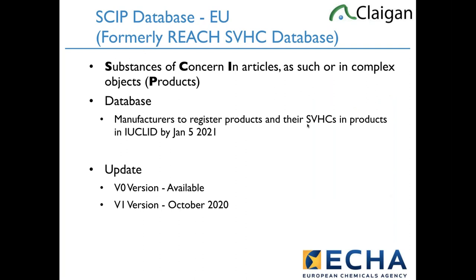We're talking about Substances of Concern in Articles as Such and Complex Objects — SKIP. This is made by the same people that created the CO-RAP chemical list, the Community Rolling Action Plan, which is the precursor list to becoming SVHCs. The same organization, ECHA, created both CO-RAP and SKIP.